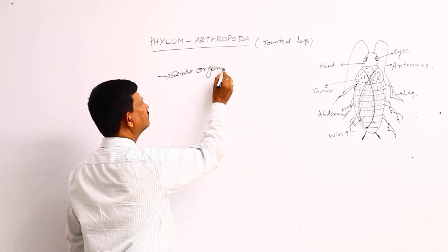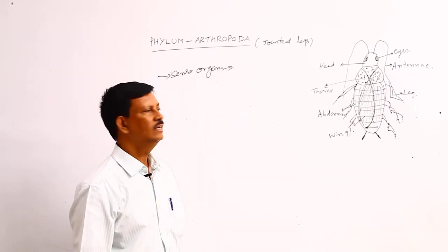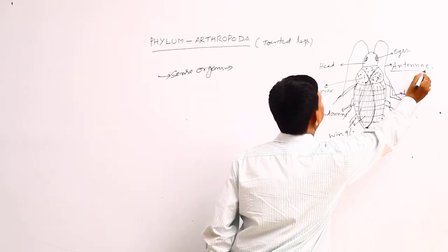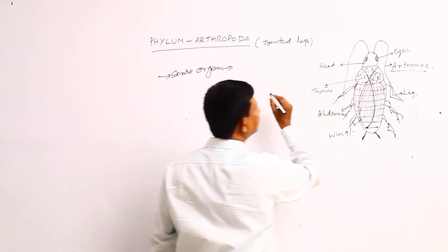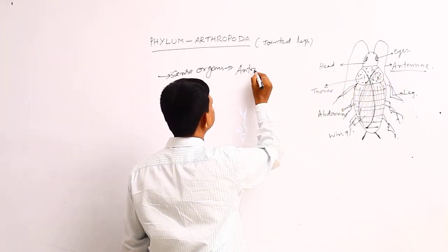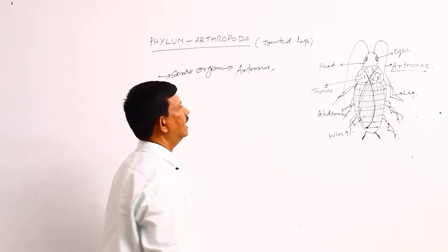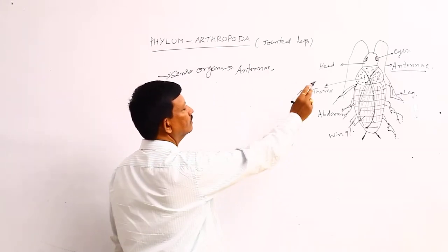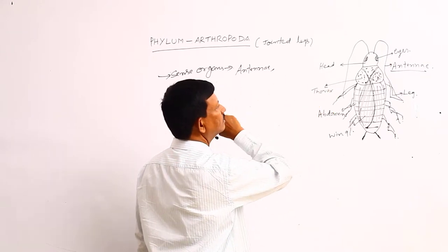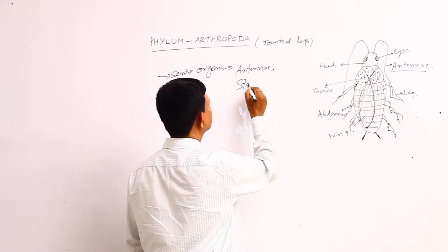Yes, there are different types of sense organs that are well developed in the phylum Arthropoda. They are known as the antennae. For example, here you can see at the anterior region antennae is present, and instead of antennae, there are some other organs also present like statocyst.